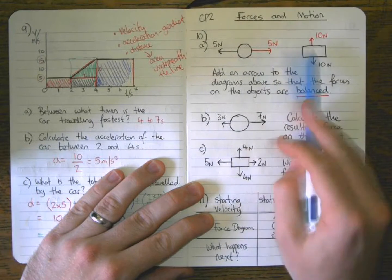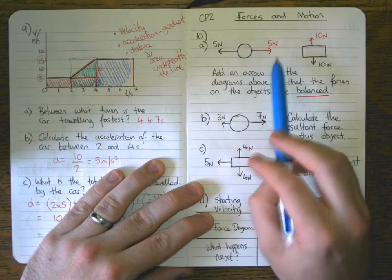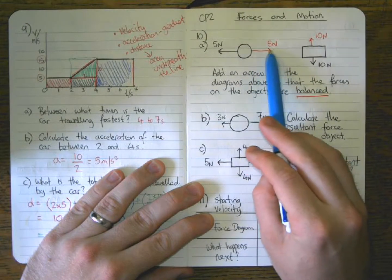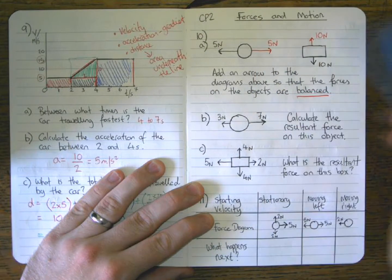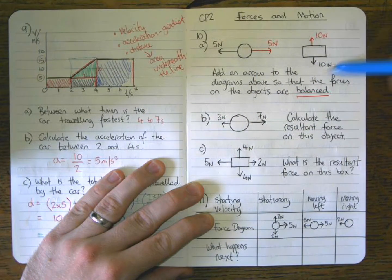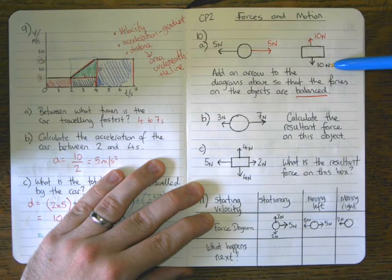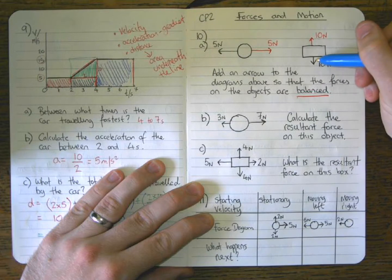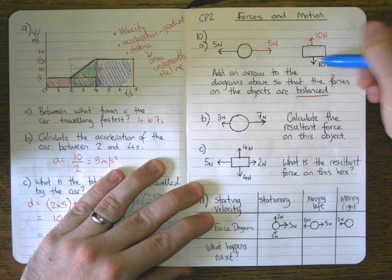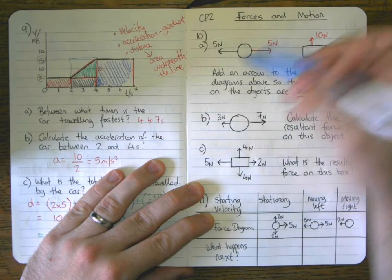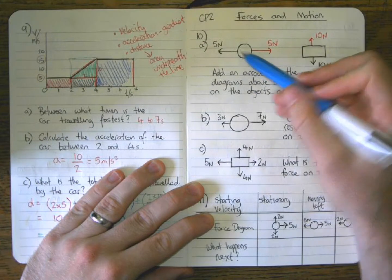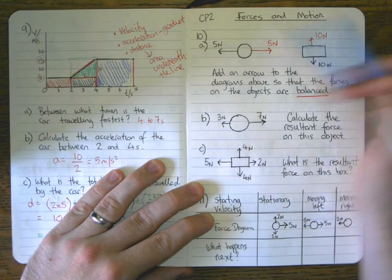These were separate parts to the question, so don't worry if one arrow looks bigger than the other. What matters is that on the object you're talking about, you follow the scale used on that diagram. So here, that size arrow represents ten Newtons, but on this diagram, that size arrow represents five Newtons.